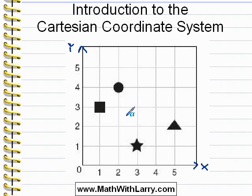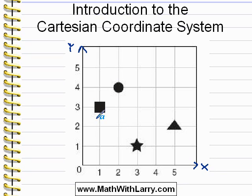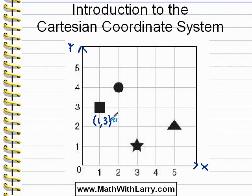Let's take a look at how we can actually identify these four points that are plotted on this graph. Let's start with the square. To identify a point, we always have to state the x-coordinate and the y-coordinate — how far along the x-axis the point is, in other words how far to the right, and then how far up it is on the y-axis. We always list the x-coordinate first, in parentheses. We can see that it's one to the right and three up on the y-axis, so the coordinates are one comma three. The x-coordinate comes first, then the y-coordinate — in alphabetical order, x comma y.